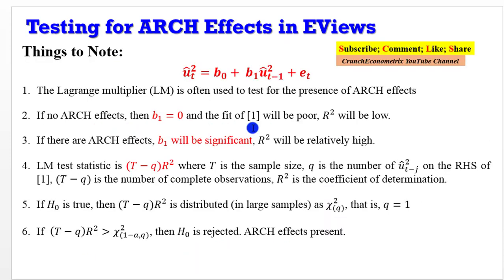On the screen are some things you need to know. The Lagrange multiplier (LM) is often used to test for the presence of ARCH effects. If no ARCH effects, then b_1 equals zero and the fit of the model will be poor, R-squared will be low. But if there are ARCH effects, b_1 will be statistically significant and R-squared will be relatively high.